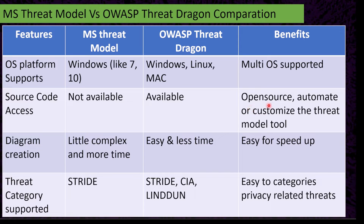OWASP Threat Dragon is open source, so we can automate and customize the threat model easily. For diagram creation, MS Threat Model is a little bit complex and more time is required, while OWASP Threat Dragon is easy and less time is required. For threat categorization, we can select three types of categories: STRIDE, CIA, and LINDDUN, making it easy to categorize privacy-related threats.